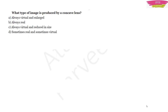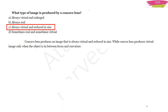Question: What type of image is produced by a concave lens? A concave lens always produces a virtual, reduced image — because it is the opposite of a convex mirror. A convex lens produces a virtual image only when the object is between the focus and the optical center.